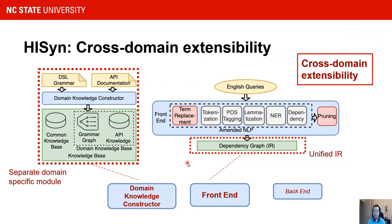The second feature of HySing is cross-domain extensibility. Inspired by how modern compilers deal with programming language varieties, the front-end produces a unified intermediate representation for arbitrary domains, and the back-end operates on this intermediate representation to generate the desired code. Since the input of the front-end is always general natural language, neither the front-end nor the back-end requires changes across domains. For domain-specific elements, HySing encapsulates them into a separate module. For new domains, the developer only needs to extend that module by providing new API documentation, with no changes needed for the HySing framework itself.